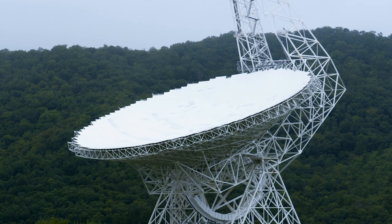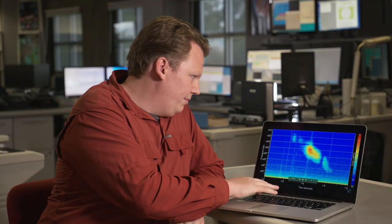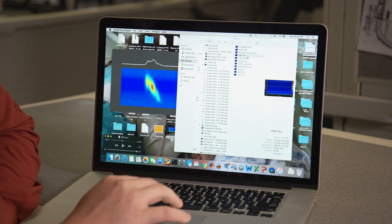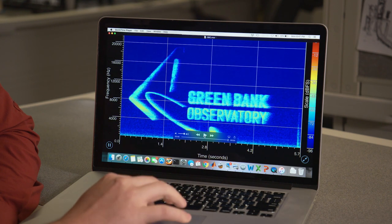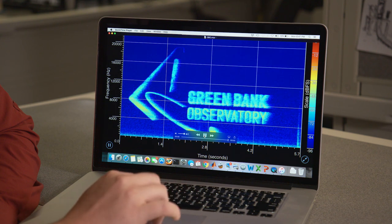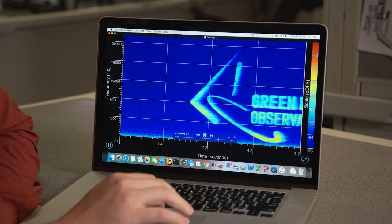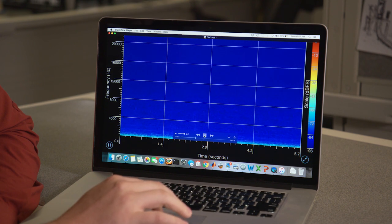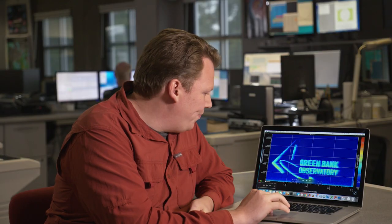To demonstrate what an encoded message could look and sound like, Andrew Seymour has created one from scratch. Each pixel in this image of the Green Bank Observatory's logo corresponds to a different frequency and time. Think about them like a series of notes on a sheet of music. Here, instead of having seven or twelve notes that we may have on other instruments, we have over a thousand notes being played here. When all of those notes are played together, we see and hear this.